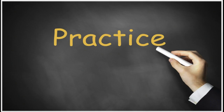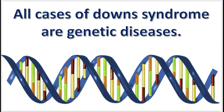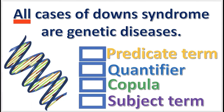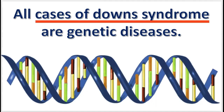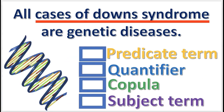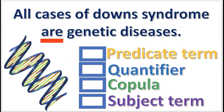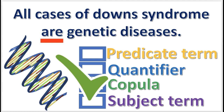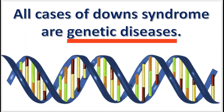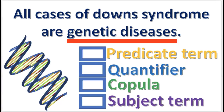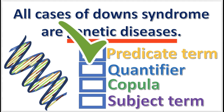Let's practice what we have learned so far. In this categorical proposition, what is the word all called? Press pause if you need to. The answer: the quantifier. Next, what is 'cases of Down syndrome' called? That's right, it's the subject term. Now, what is the word are called? The answer is copula. What is 'genetic diseases' called? Correct — it's the predicate term.